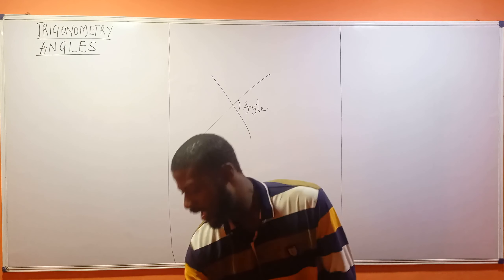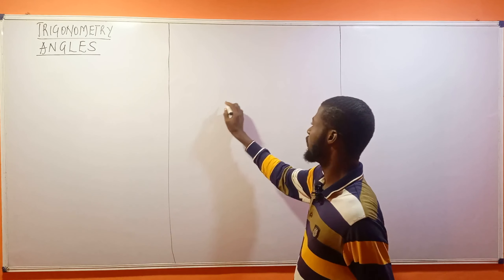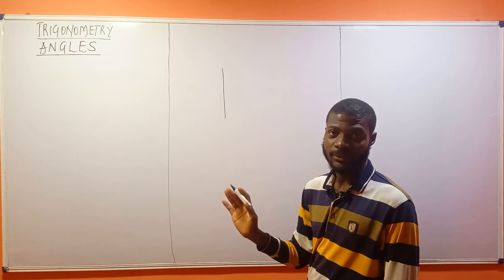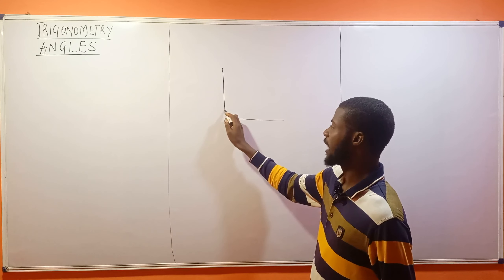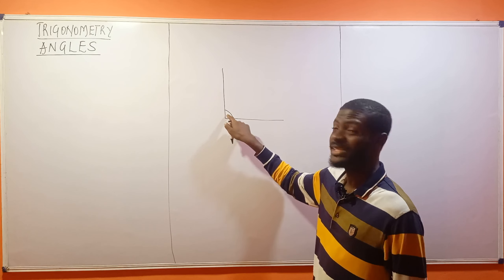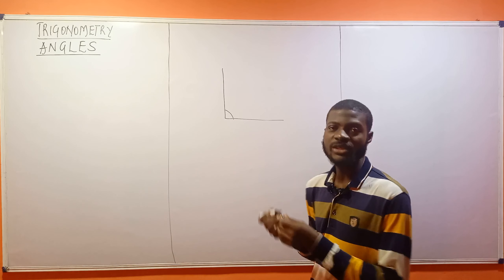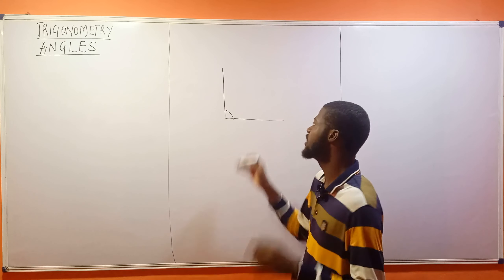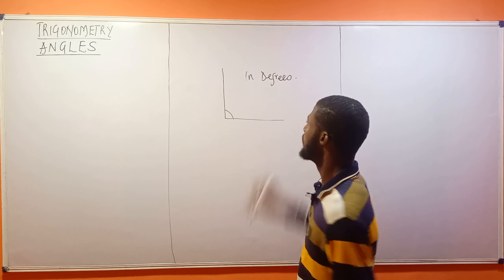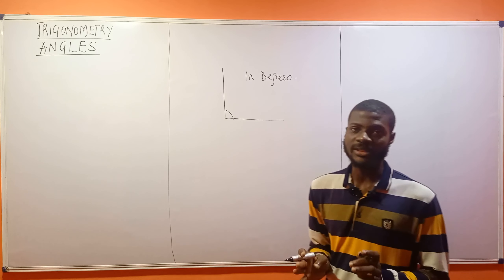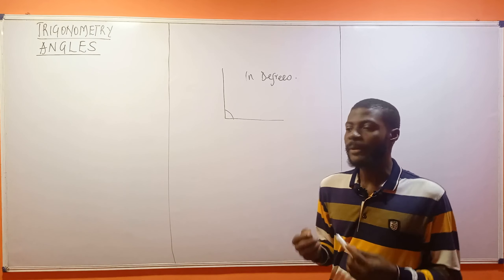What if I have this very line — this is a single line — then another line comes in this way. There will be an angle here because this is the space between two lines. So whenever we measure this very space between two lines, it's normally measured in degrees. This very thing is what we call an angle.